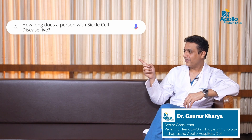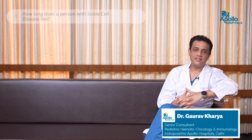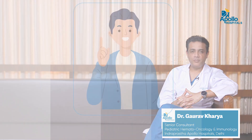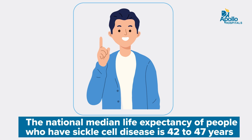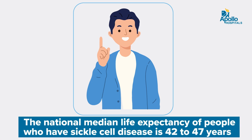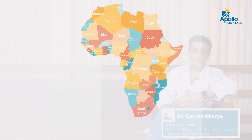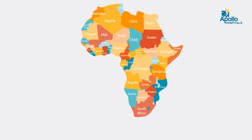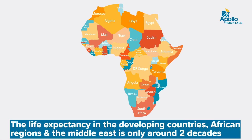Sickle cell disease is a life-limiting and life-threatening disease. The average life expectancy of a person affected with sickle cell disease, even in the best possible clinical scenarios, is not beyond four decades of life. This is very different in the developed world compared to developing countries. In the developed world, it is usually around four decades, but in developing countries — African countries, the Middle East — the average life expectancy of a child with sickle cell disease is not beyond the second decade.